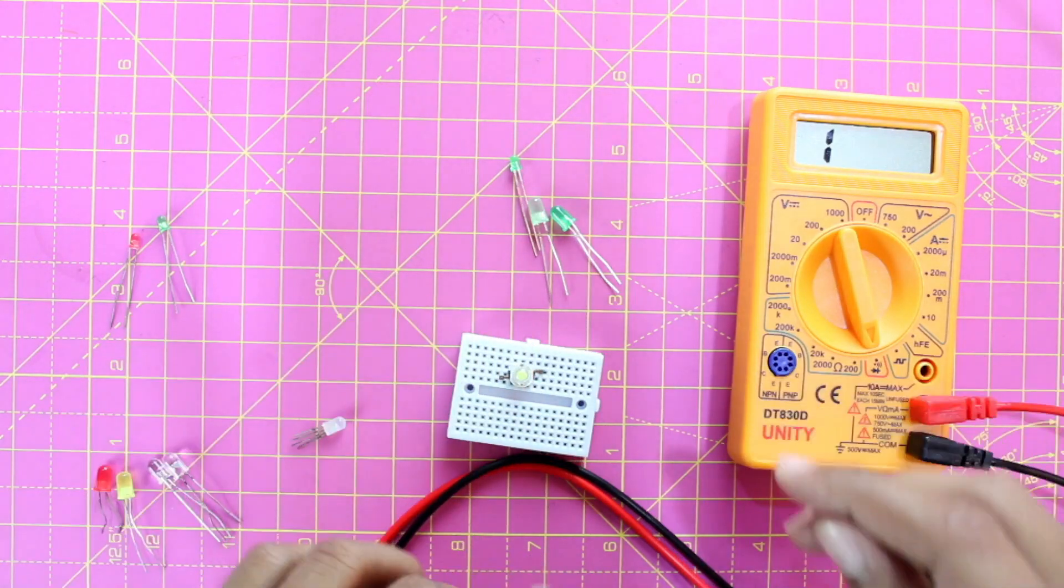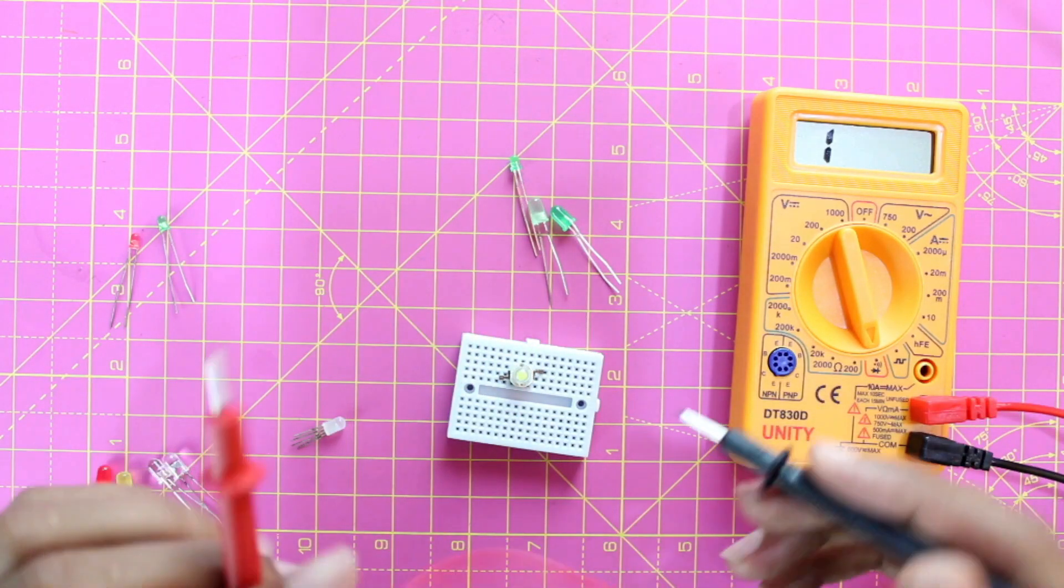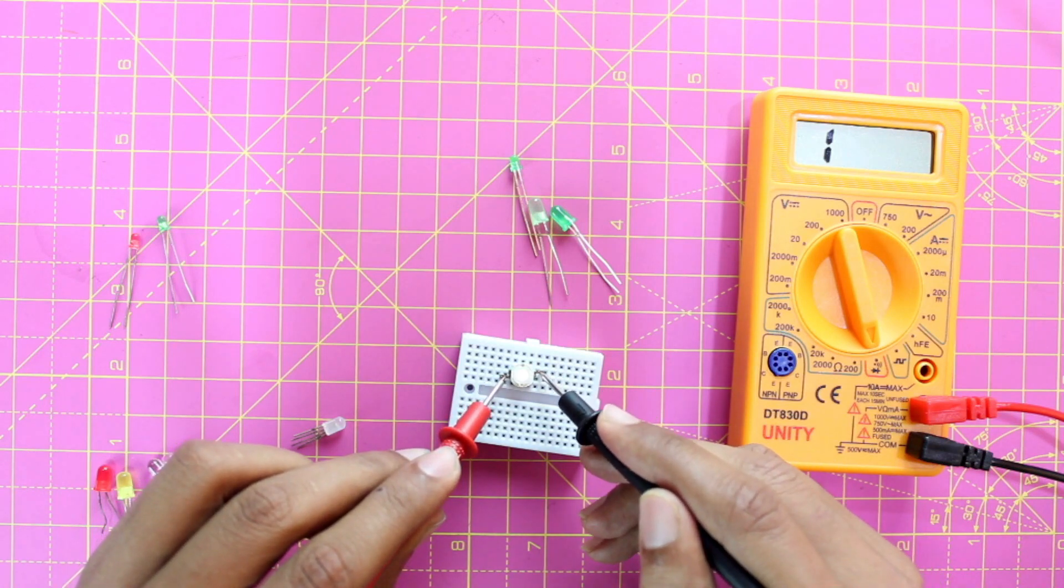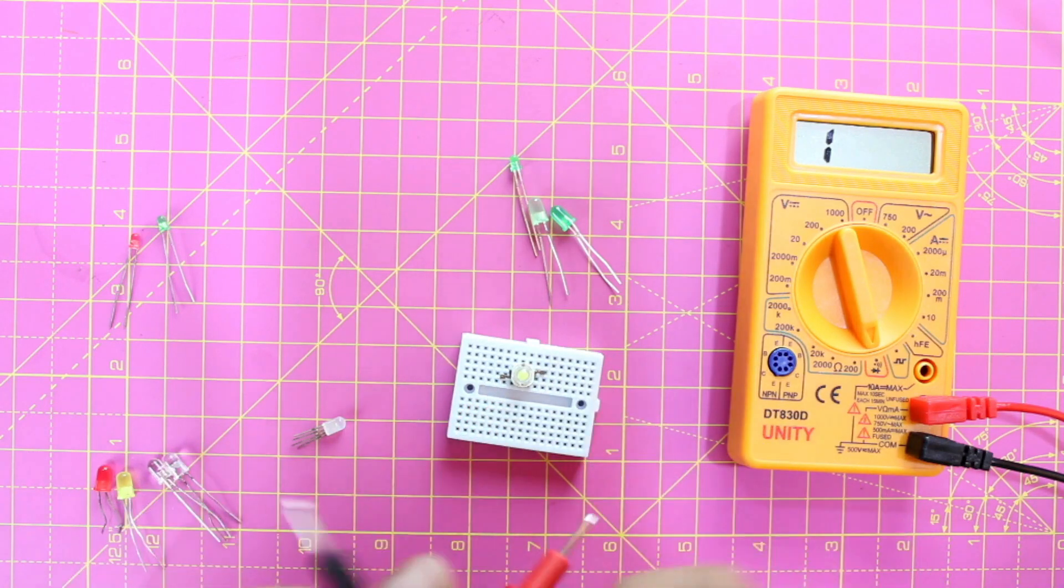High power LEDs like this one - here we won't be able to identify which is positive and which is negative, so just place the probes here and here and see. In this direction it's working. If I reverse it, it won't work. You can even do this method for RGB LEDs like this one.